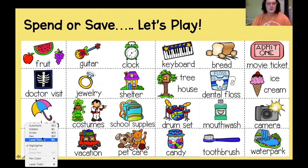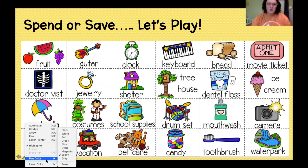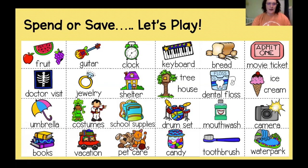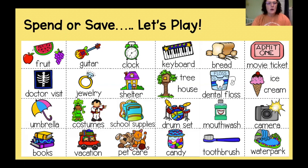First up: fruit. Should we spend or should we save on fruit or food? It's a need — we need our food. So we're going to spend. Check mark — we're going to spend.